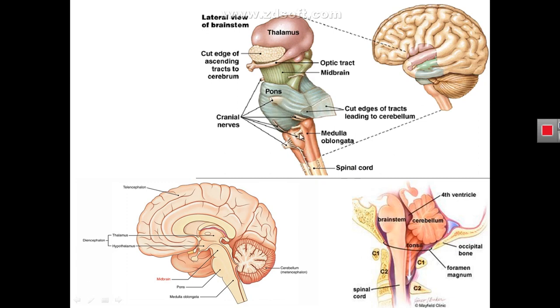The brain stem is made of the midbrain, pons, and medulla oblongata, from above downward.